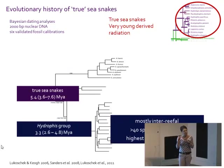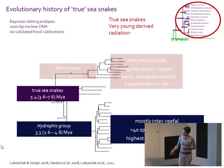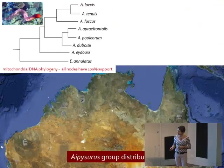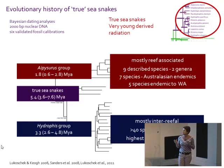True sea snakes have two distinct evolutionary lineages: a much larger lineage that's mostly interrephal, mostly occurring in Southeast Asia, whose most recent common ancestor probably evolved around three million years ago. And then the other main group, which is mostly reef-associated and which I'm going to be focusing on today, whose most recent common ancestor probably lived about two million years ago. It's a much smaller group.